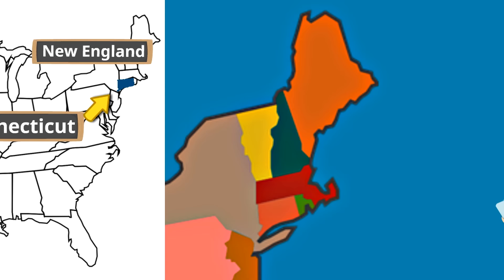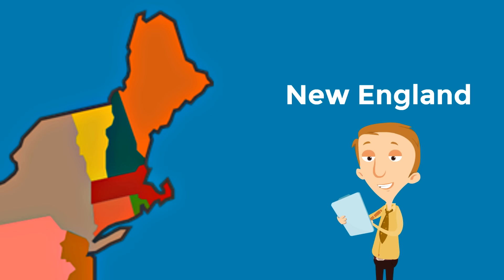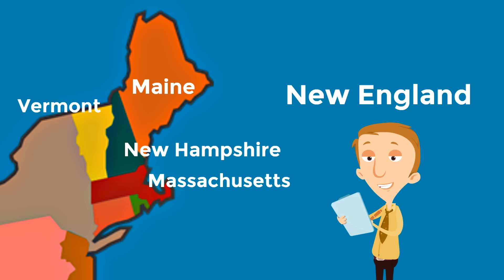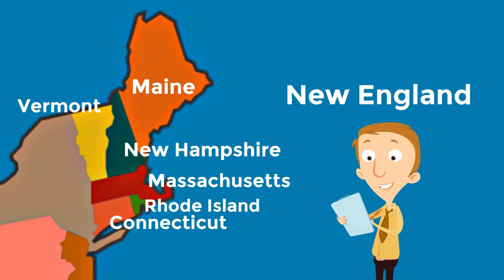The region called New England is in the farthest northeast corner of the United States. There are six states that belong to this region. The northernmost state is Maine. Then below Maine is New Hampshire. To the west of New Hampshire is Vermont. Below Vermont and New Hampshire is Massachusetts. And then below Massachusetts are two states: Rhode Island, and Connecticut — the southernmost state in New England.